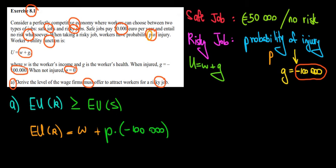Let's see what would be the expected utility for a safe job. The expected utility of a safe job is actually something certain because the wage is given to us as 50,000 euros and there is no risk. So 50,000 euros. And if there is no risk, there are no costs for health.